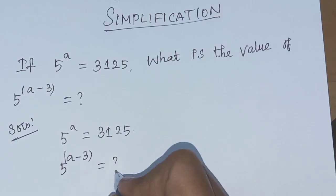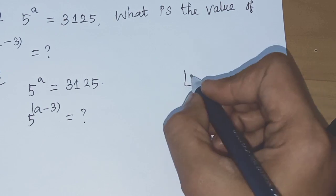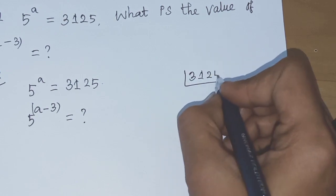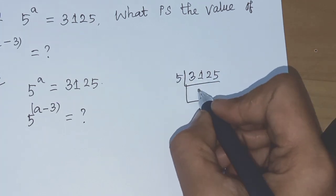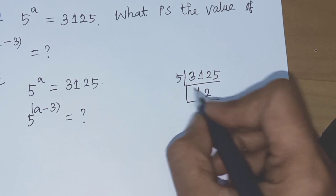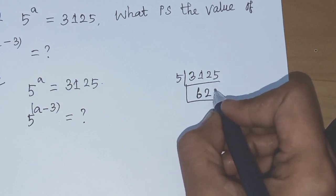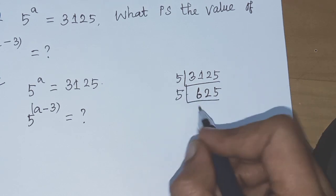The value of 3125. Divide by 5: 625. Then 5 into 30 is 6, remainder 0. 5 into 12 is 2, remainder 2. 25. 5 into 25 is 5. Using the 5 tables.